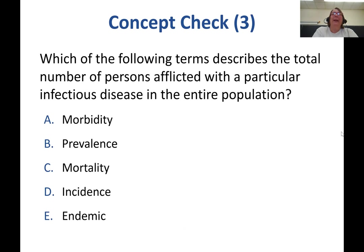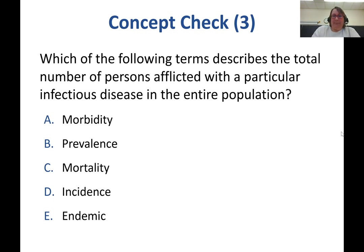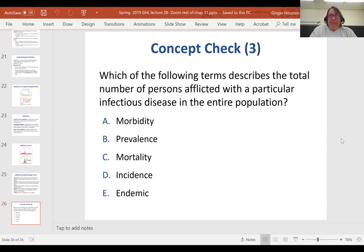Concept check: which of the following terms describes the total number of persons afflicted with a particular infectious disease in the entire population? The answer is B — prevalence.